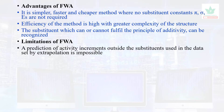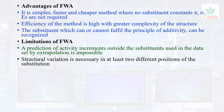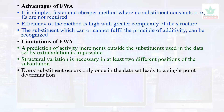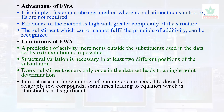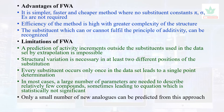Now let us see the limitations of the Free-Wilson approach. Prediction of activity by extrapolation outside the substituents used in the data set is not possible, whereas this is possible with Hansch analysis. Structural variation is necessary in at least two different positions of substitution. Every substituent occurs only once in the data set, which leads to single-point determination. In most cases, a large number of parameters are needed to describe relatively few compounds, sometimes leading to an equation that is not statistically significant. Additionally, only a small number of new analogs can be predicted, and it is limited to linear additive structure-activity relationships.